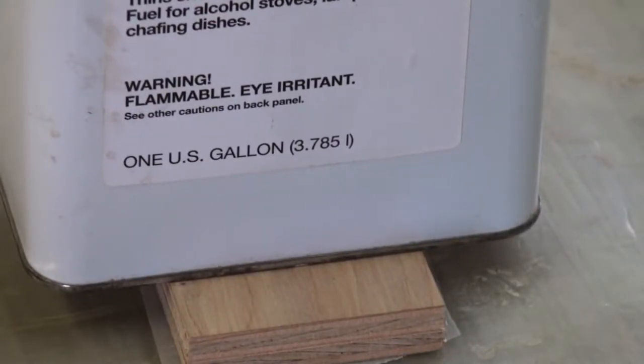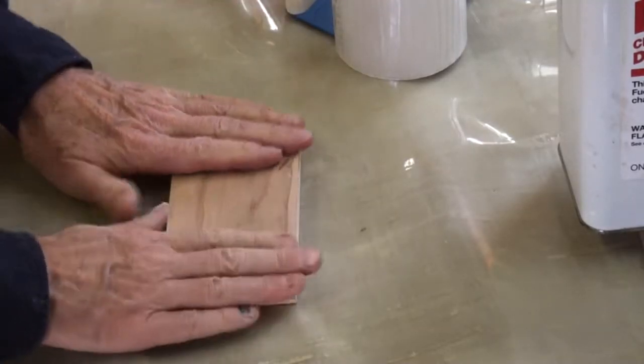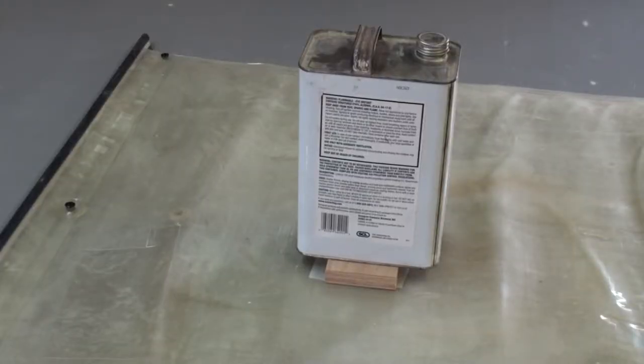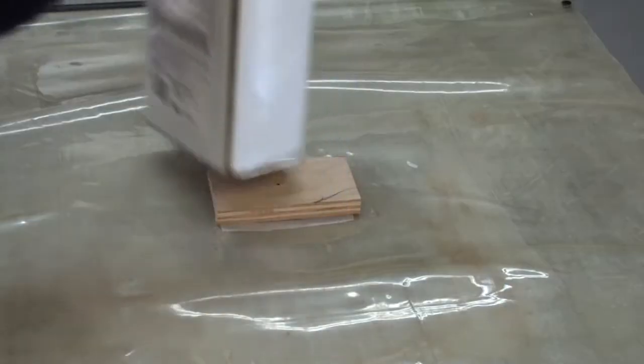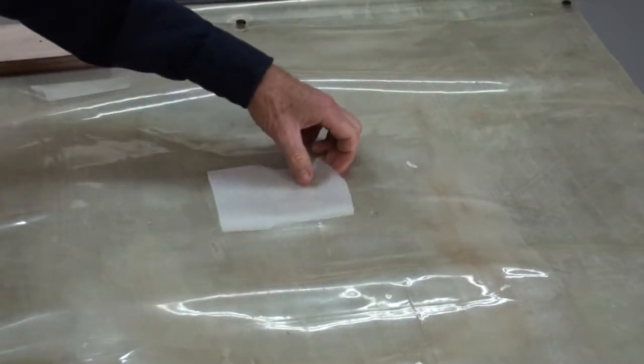The wax paper prevents any glue squeeze out from sticking to the block of wood. Clear packaging tape on the block will work as well. Let's let this sit overnight to give the glue time to fully cure. Here's the patch the next day. Good as new.